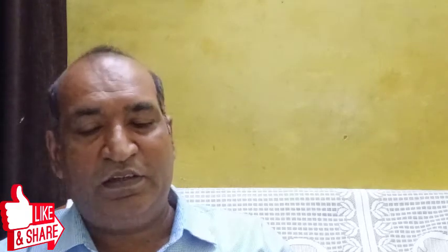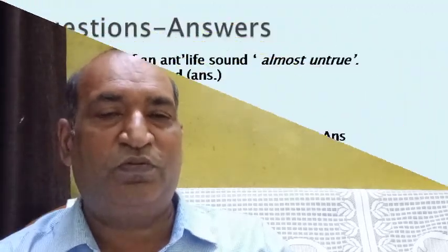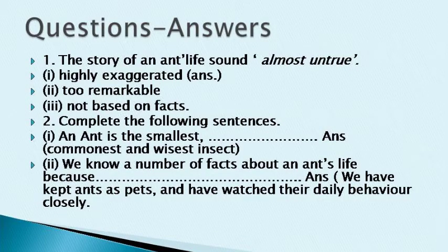Now let's move to the question and answer section. The first question: 'The story of an ant's life sounds almost...' — the options are: highly exaggerated, remarkable, or not based on facts. The answer is 'highly exaggerated.' Second question: Complete the following sentence — 'An ant is the smallest...' The answer is: the ant is the smallest, commonest, and the wisest insect.